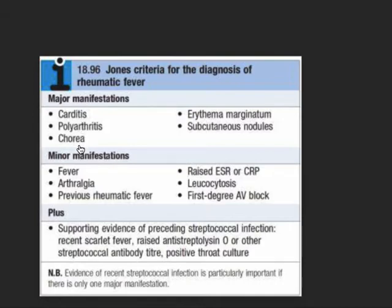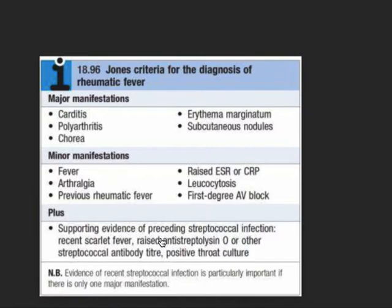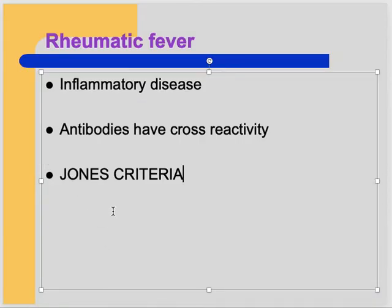Treatment remains the same: penicillin; if penicillin-allergic, erythromycin. Rheumatic fever complications: anyone who has rheumatic fever can later develop infective endocarditis or valvular heart disease, because the cross-reactivity starts damaging the patient's own body. Chronic complications include valvular heart disease and infective endocarditis.